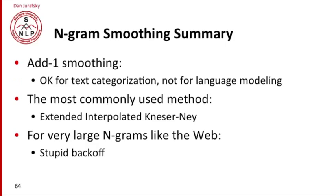So, in summary for smoothing so far, add one smoothing is okay for text categorization, but it's not recommended for language modeling. The most commonly used method we'll discuss in the advanced section of this week is the Kneser-Ney algorithm or the extended interpolated Kneser-Ney algorithm. But for very large n-grams like situations where you're using the web, simplistic algorithms like stupid backoff actually work quite well.